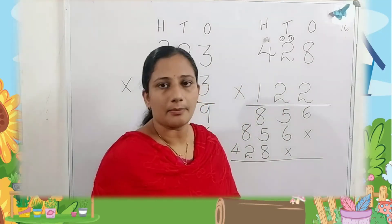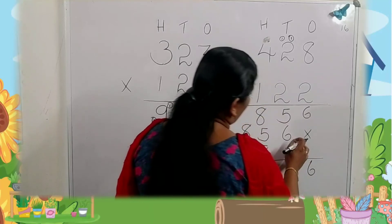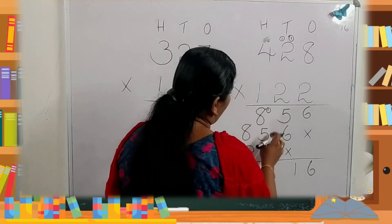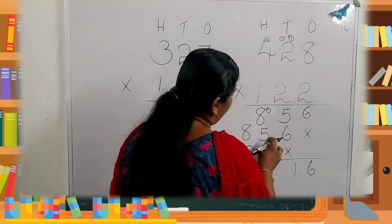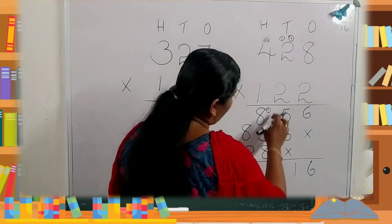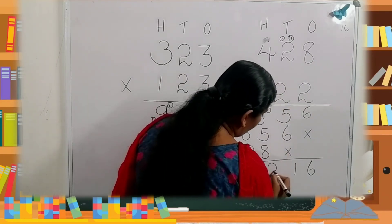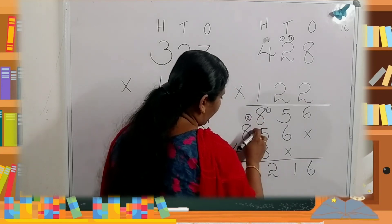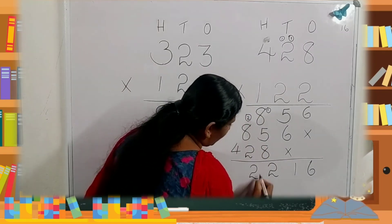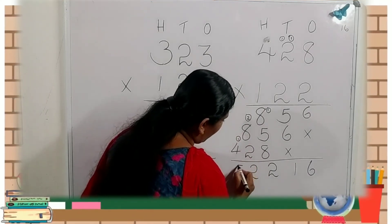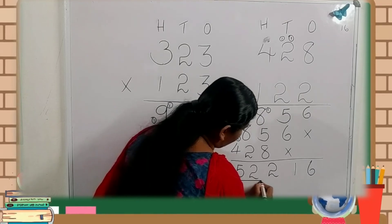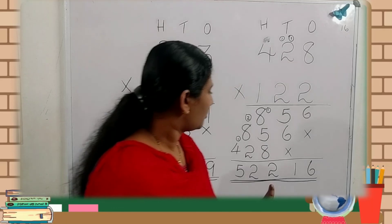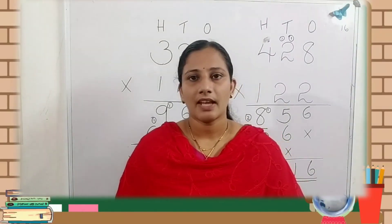Add these numbers. Here six. Six plus five is eleven, carry over. Eight plus five is thirteen. Thirteen plus eight is twenty-one, plus one is twenty-two. Then eight plus twenty-two — write two here, carry over. Eight plus two is ten, ten plus two is twelve, carry over. Four plus one is five. What is the answer? Fifty-two thousand, two hundred sixteen is the answer.